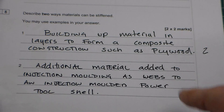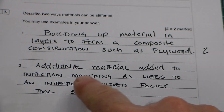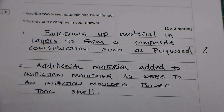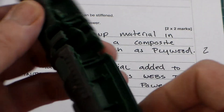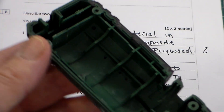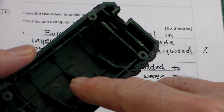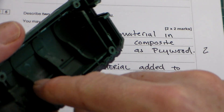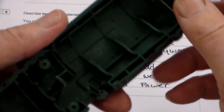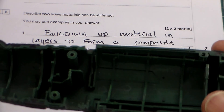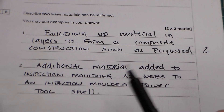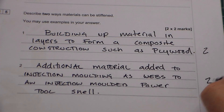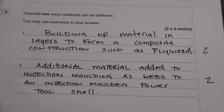The second method is webbing: additional material added to injection mouldings as webs — for example, to an injection-moulded power tool shell. Here we have an injection-moulded power tool shell from a mini tool, and you can see these lines inside — that is all webbing. So we've got additional material added to an injection moulding as our example, giving us two marks. That is question 15.